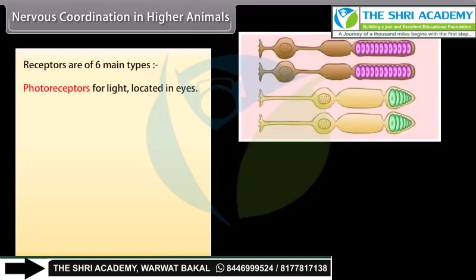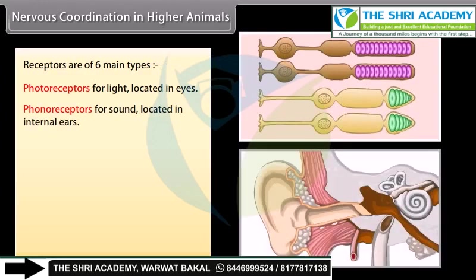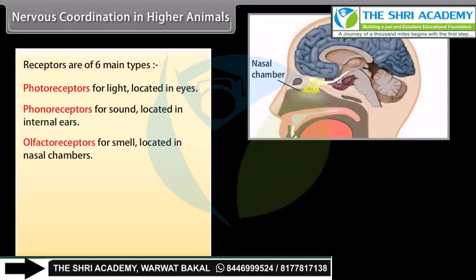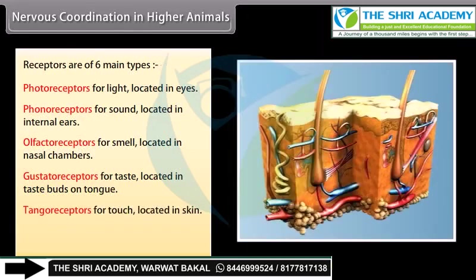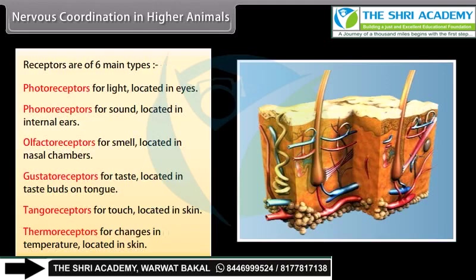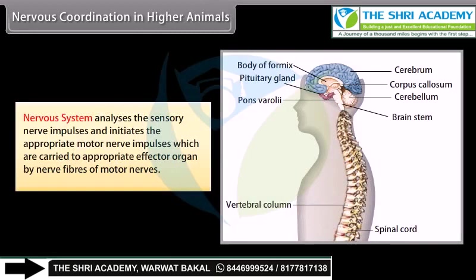Photoreceptors for light, located in the eyes. Phonoreceptors for sound, located in the internal ears. Olfactory receptors for smell, located in nasal chambers. Gustatory receptors for taste, located in taste buds on the tongue. Tangoreceptors for touch, located in the skin. Thermoreceptors for changes in temperature, located in the skin.